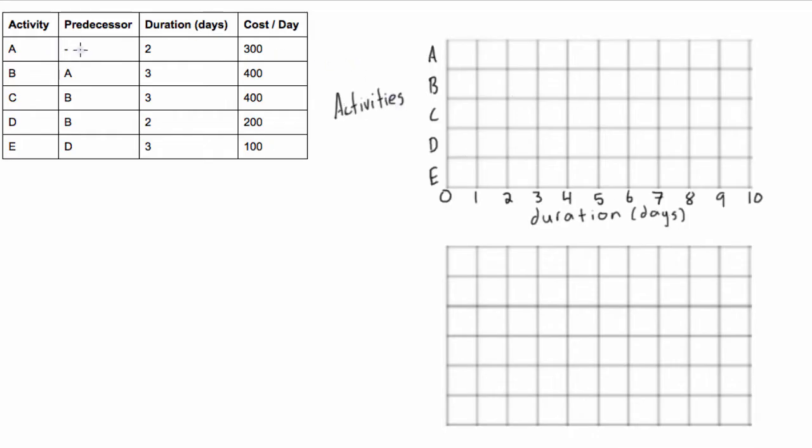So first of all we'll have activity A. It has no predecessor so that means it starts at the beginning of the project and it's two days long. So we're going to do that with a straight line, two days long and it will look like that, day one, day two.